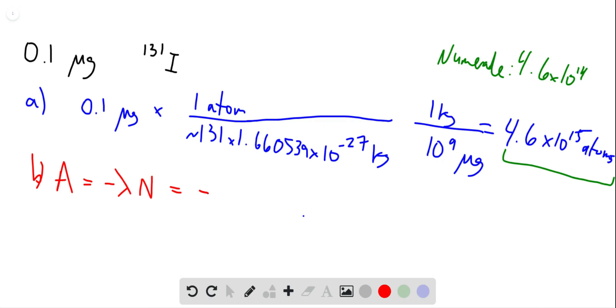Lambda is 0.693 over the lifetime, and they give us a lifetime here of 8.02 days, so times N. I'll use 10 to the 14 because then we can compare with the other answers they have.